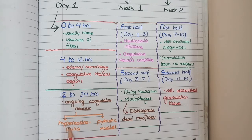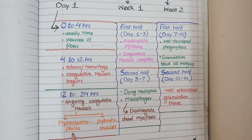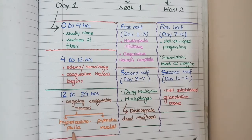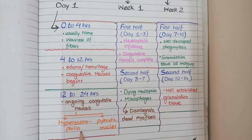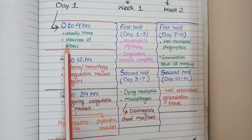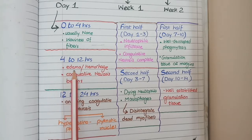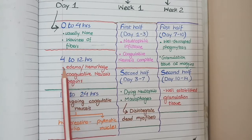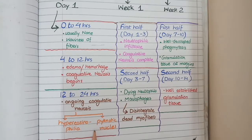The cytoplasm becomes hypereosinophilic because it normally contains rough endoplasmic reticulum and ribosomes that appear as basophilic particles. Due to the degeneration of these structures in coagulative necrosis, the cytoplasm becomes hypereosinophilic, as there are no remaining basophilic structures. So overall on day 1: little or no microscopic changes from 0 to 4 hours; edema and beginning of coagulative necrosis from 4 to 12 hours; and progression and completion of coagulative necrosis from 12 to 24 hours.